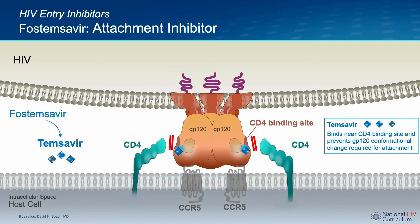So how does an attachment inhibitor work? As a reminder, attachment of the HIV viral particle to the CD4 host cell starts with attachment of the GP120 envelope glycoprotein to the CD4 receptor at the CD4 binding site. Temsavir binds near this CD4 binding site and prevents the conformational change of GP120 that is necessary for attachment to occur. Thus, it blocks the initial attachment of HIV virus to the host CD4 T cell.